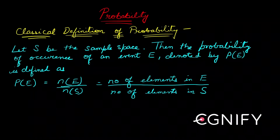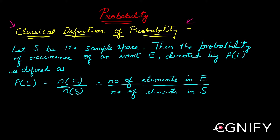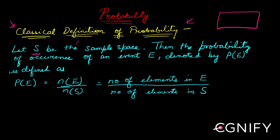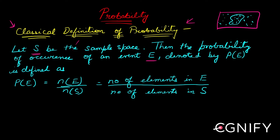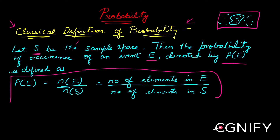Let's look at the classical definition of probability. This chapter doesn't have a lot of formulas — just a few very basic ones — but the difficulty comes in applying the formula by deducing each case to something numerical. Basically, you have S as your sample space and an event E within that sample space. The probability of E, written as P(E), is given by the formula n(E) divided by n(S) — the number of elements in E divided by the number of elements in S.